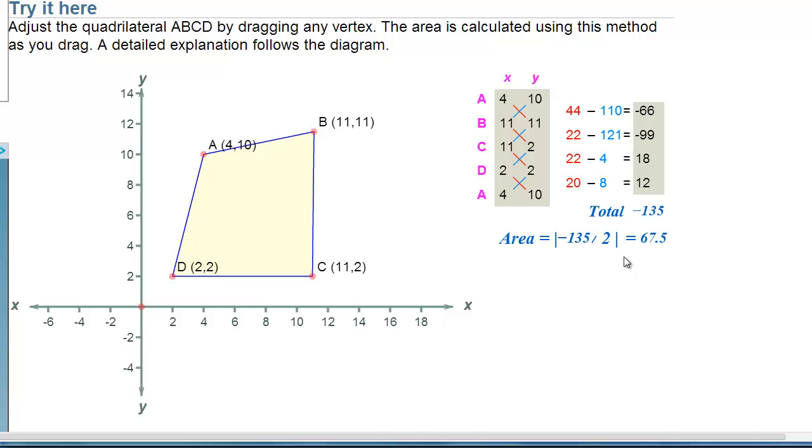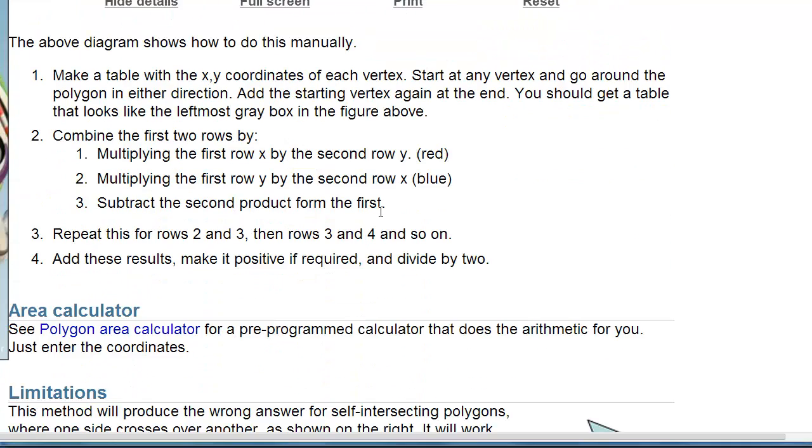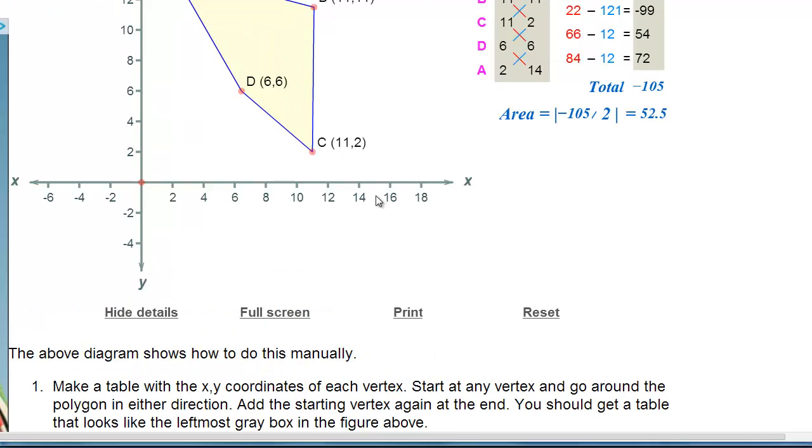They do the shoelace algorithm. They show you all the numbers here. And notice they take the absolute value to get the area. Again, we're not worried about the absolute value. In fact, we're not even worried about the divide by 2 in the end. We're just worried about the sign indicating whether the triangle is facing the camera or not. But they have this cool tool here.